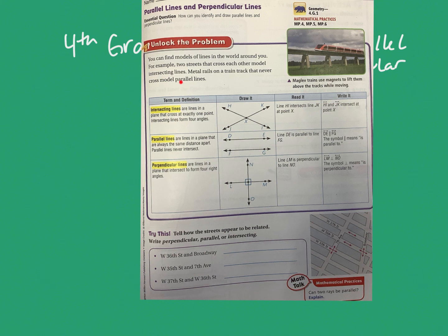Here is some vocabulary for different types of lines. Intersecting lines are lines in a plane — a flat, two-dimensional surface — that cross at exactly one point. Here we have a line going this way and a line going that way, and they do cross each other at one point.